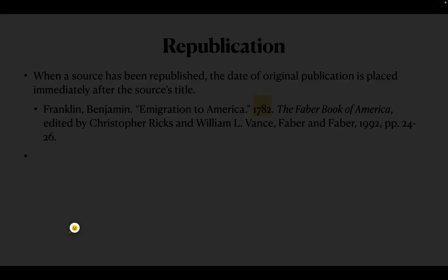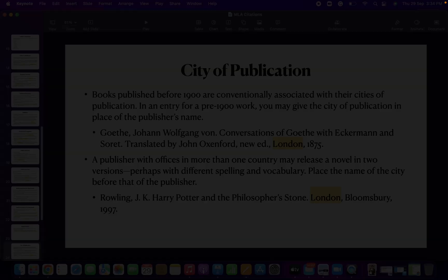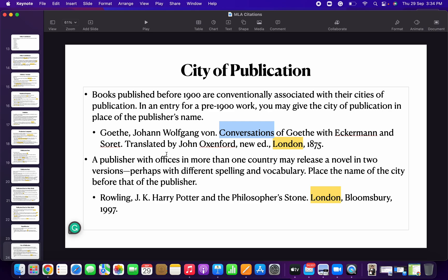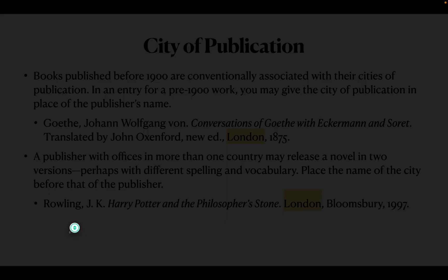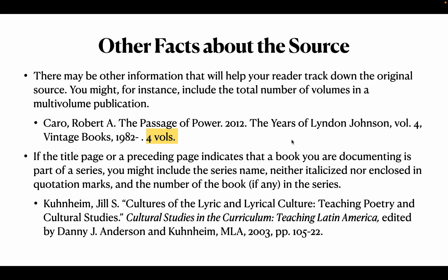City of publication is next. Books published before 1900 are conventionally associated with their cities of publication. For example, Goethe's 'Conversations of Goethe with Eckermann and Soret,' London 1975 — no need to give the publisher, only London. A publisher with offices in more than one country may release a novel in two versions with UK or US spelling, so you have to cite the city. For Harry Potter: is it the UK or US edition? You write London, Bloomsbury.